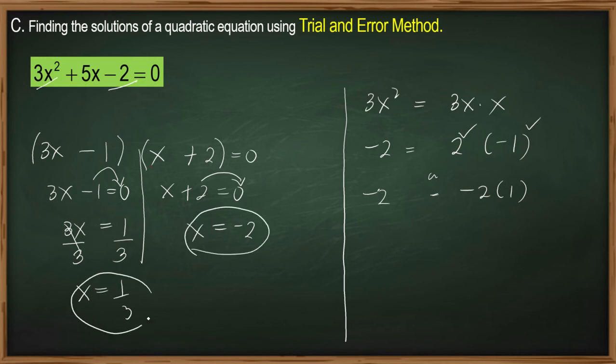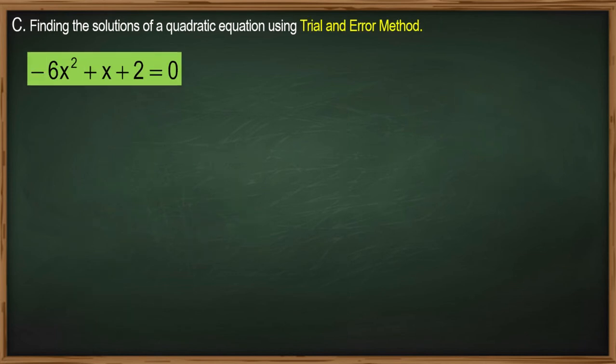For the other factor, transpose positive 2; it becomes negative 2. So our x equals negative 2. That's how we do it.